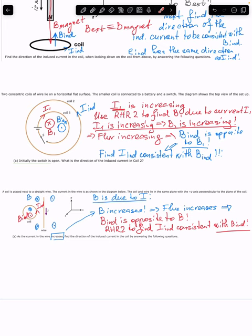Even if I1 didn't change it would still produce a magnetic field. We can indicate this magnetic field here: using the right-hand rule number two to find the direction of this magnetic field inside the coil. Now I1 is increasing as a function of time, and the magnetic field generated by a current is proportional to that current, so the magnetic field also increases as a function of time.